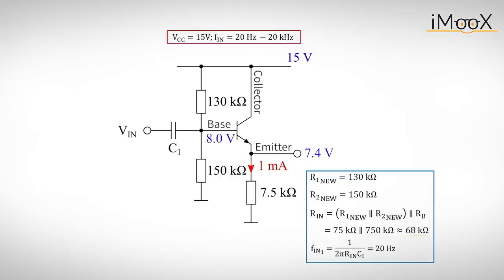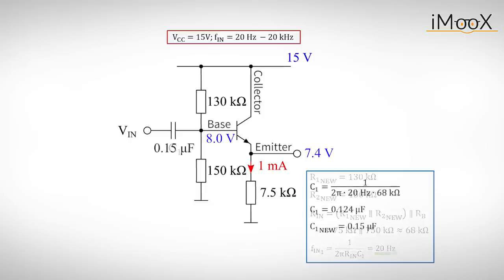This leaves us with a value of 68k to design the high-pass filter with C1. We can now calculate the capacitor for a 3dB cutoff frequency of 20 Hz. Again, we want to choose a proper value in the E24 series and finally get a capacitor value of about 0.15uF.